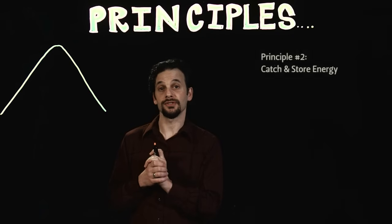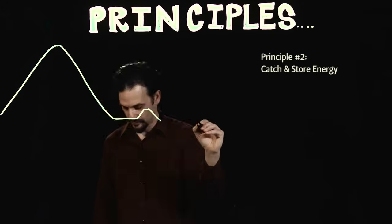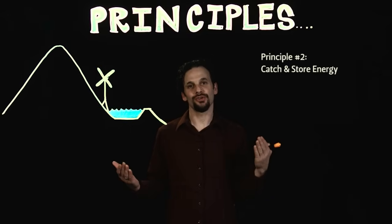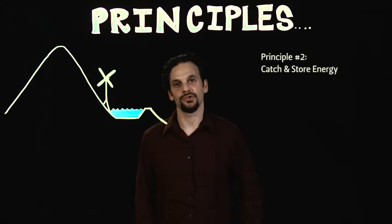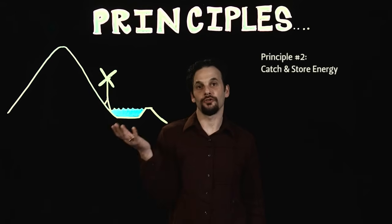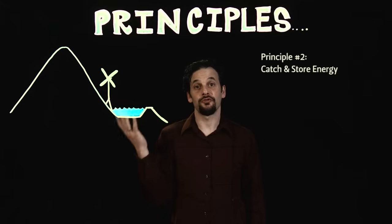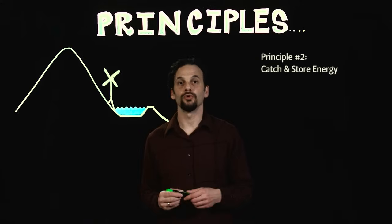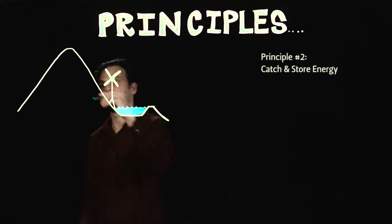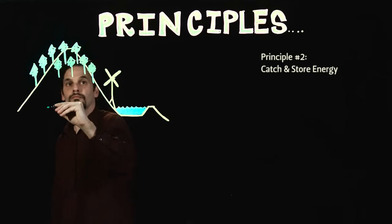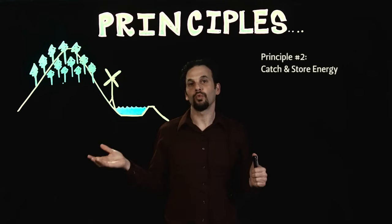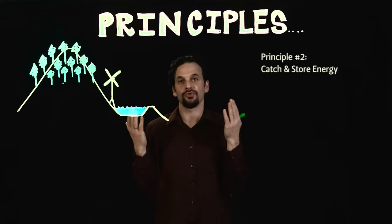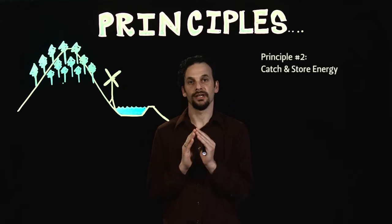Principle 2 is Catch and Store Energy. Energy is not just electricity — stored water represents potential energy in the form of irrigation water for future crops. The biomass of a forest represents a living storage of building materials, fuel, nutrients, and water. Alternative energy systems can turn wind, sun, and flowing water into electrical energy.